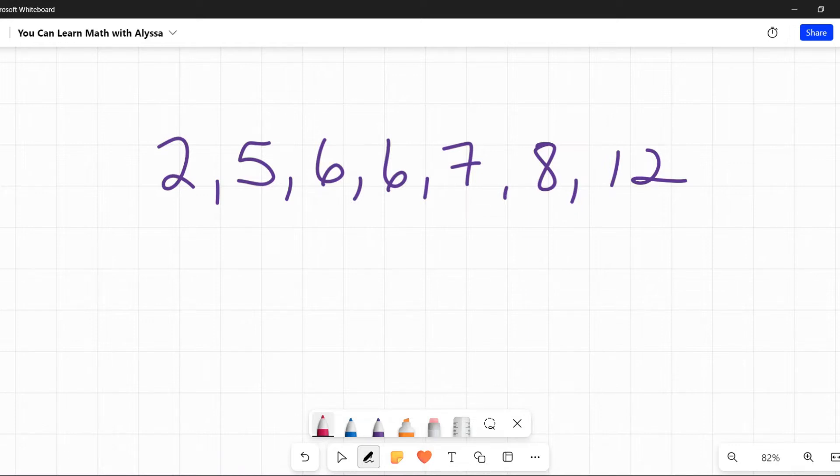We're going to explain what these terms mean - the mean, median, mode, and range - how to find them, and then at the end I'm going to give you my personal little mnemonics that help me remember these names and keep them straight.